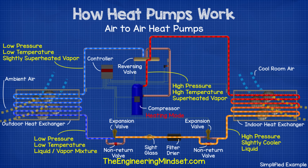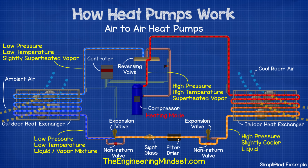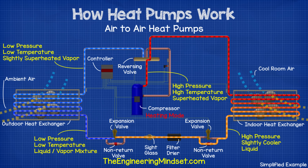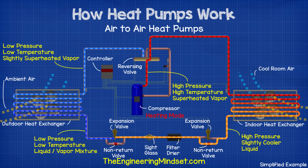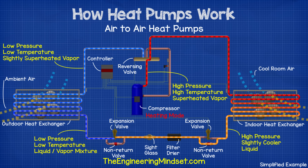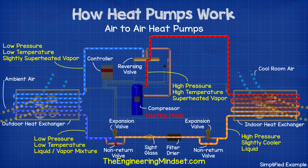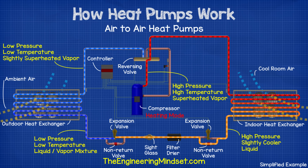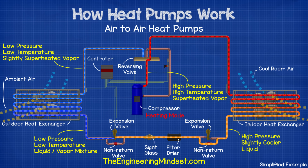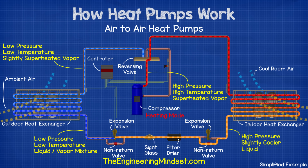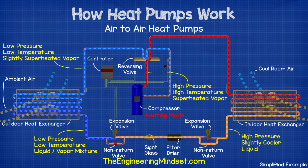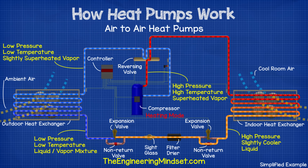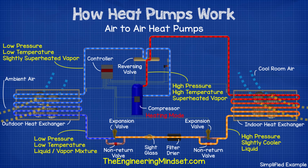The refrigerant picks up the thermal energy from the outside air and leaves the outdoor heat exchanger as a low pressure, low temperature, slightly superheated vapor, and then heads back to the reversing valve. The reversing valve then diverts this to the compressor to repeat the cycle.